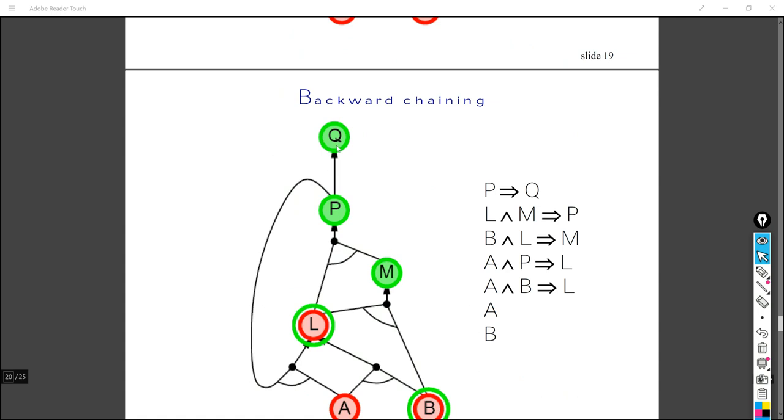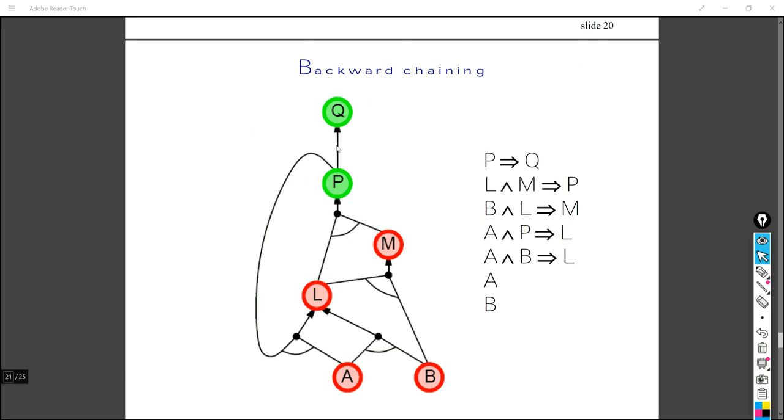So for backward chaining, it's faster and easier. So I believe in exams, normally, it won't just give you a tree. It will give you this knowledge base and ask you to analyze or to prove the query by using forward or backward chaining. So you have to draw the tree yourself. So just make this annotation clearly to make sure that you understand the concepts.